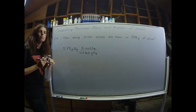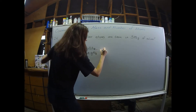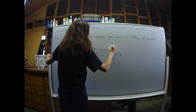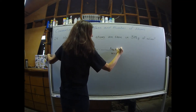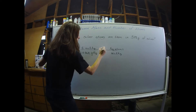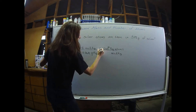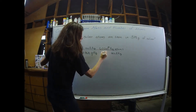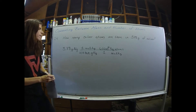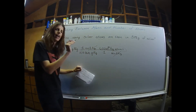Now that I'm in moles of silver, I can convert to silver atoms using Avogadro's number: 6.02 times 10 to the 23rd silver atoms in one mole of silver. Moles of silver cancel with moles of silver, leaving us with just silver atoms.